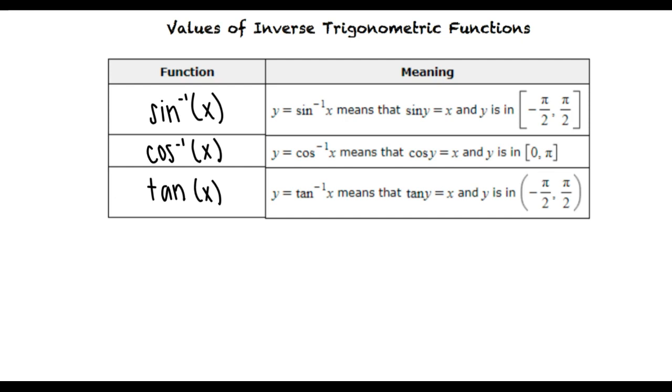Let's take a look at an example problem. Say we want to find the exact value of the inverse sine of square root 3 over 2 in radians. This means we will need to find the angle y in the range negative pi halves to pi halves, such that sine of y equals the square root of 3 over 2.